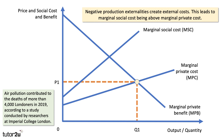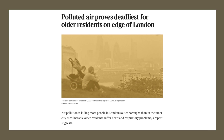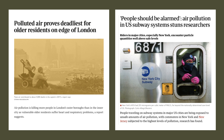Air pollution is a major issue. Air pollution is estimated to have contributed to the deaths of more than 4,000 Londoners in 2019, according to researchers from Imperial College London. So marginal social cost lies above private cost, and there's lots of evidence that air pollution is killing people in London and other major cities. People travelling on subway systems apparently are being exposed to unsafe amounts of pollution — staggering levels which have stunned researchers.